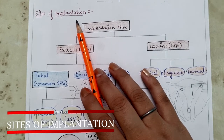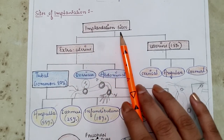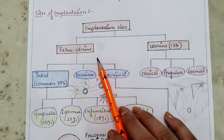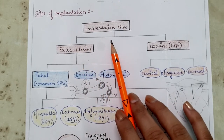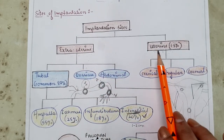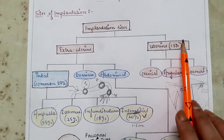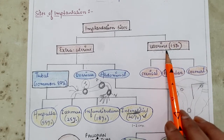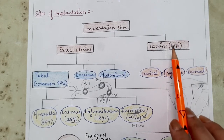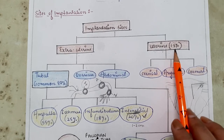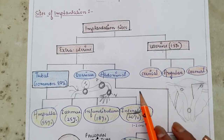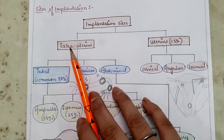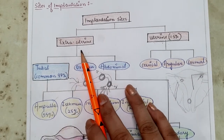Implantation sites are separated into two types: extra-uterine, where the fertilized ovum implants outside the uterine cavity, and uterine, where it implants inside the uterine cavity but at an abnormal site. Uterine ectopic occurs very rarely — in only 1.5% of cases.